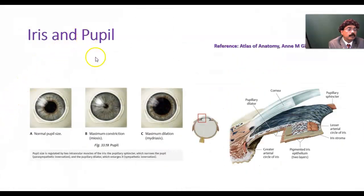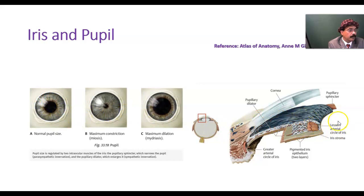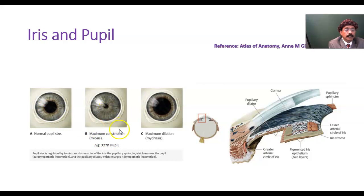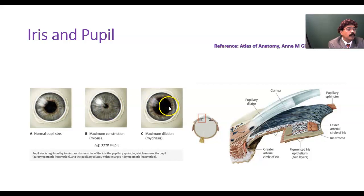So iris and pupil — this is the iris, this is the circular ring, and the gap is the pupil. Normal pupil size, maximum constriction is miosis, and maximum dilation is mydriasis. Some drugs cause miosis, some drugs cause mydriasis.